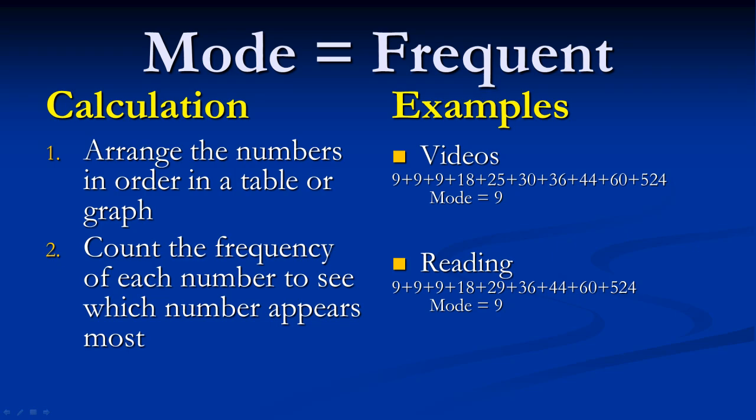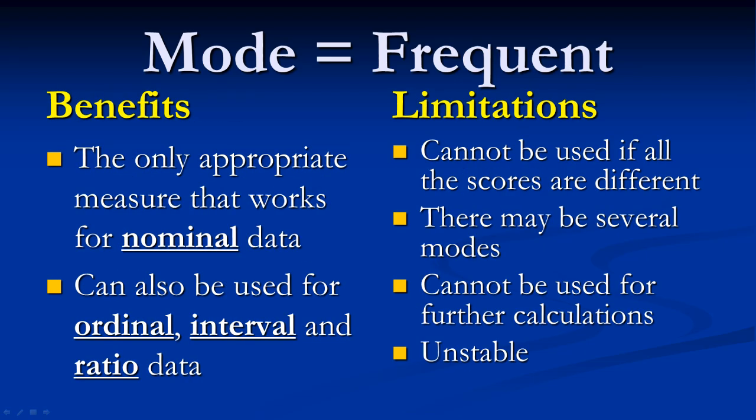In a testing situation, you would likely order the numbers, then count the frequency of any number that appears multiple times to determine the mode. The mode is the only measure of central tendency you can use for nominal data. While it can be used for all levels of measurement, it is considered unstable since fluctuations are likely between sample populations.